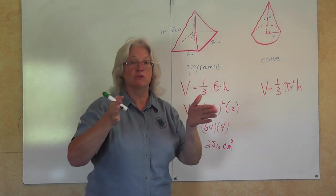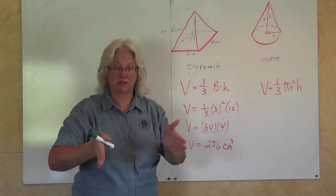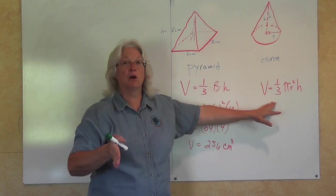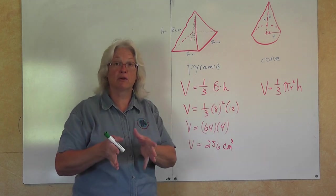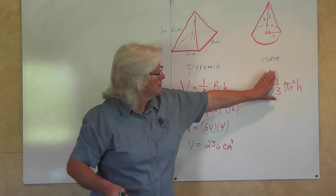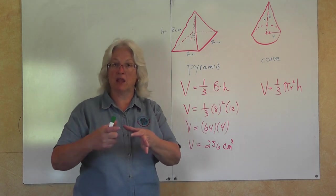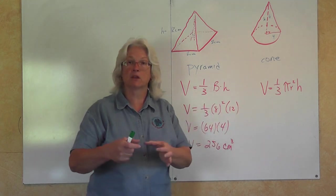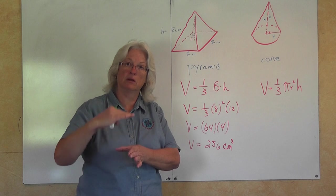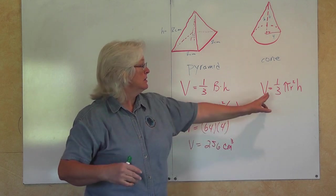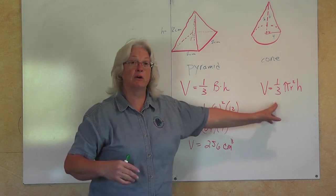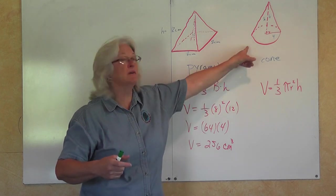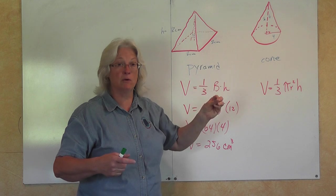You have the same relationship going on over here with a cone. The cone is related to the cylinder. The cylinder is like a can of soup. The volume of a cone is one-third the volume of a cylinder. The volume of a cylinder was found by finding the area of the circle, which is pi r squared, times the height of that cylinder. So one-third pi r squared h gives us the volume of the cone.